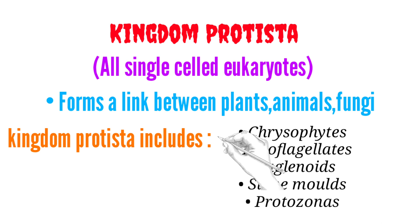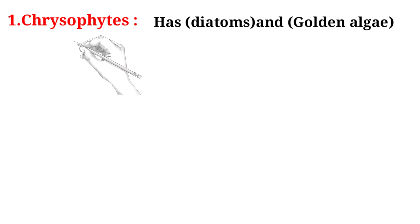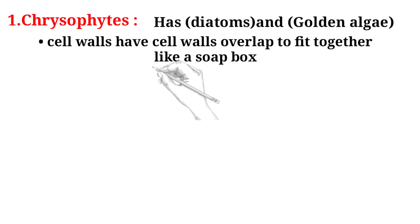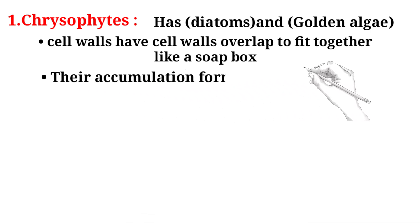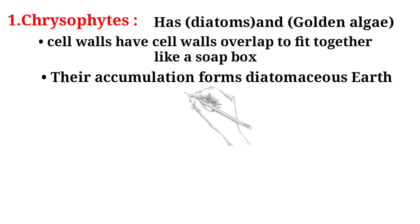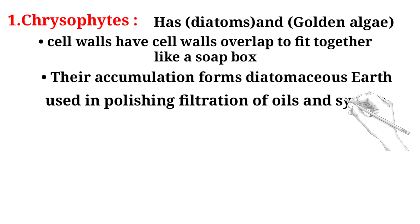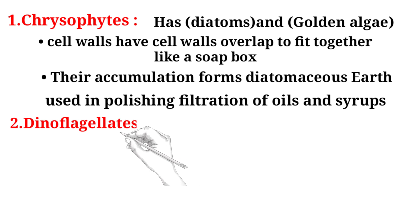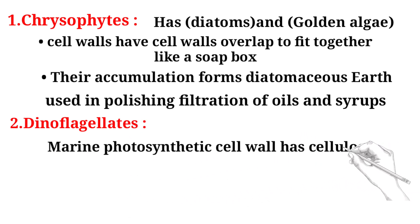First, chrysophytes — includes diatoms and golden algae. Their cell walls overlap to fit together like a soapbox. Their accumulation forms diatomaceous earth, which is used in polishing and filtration of oils and syrups.